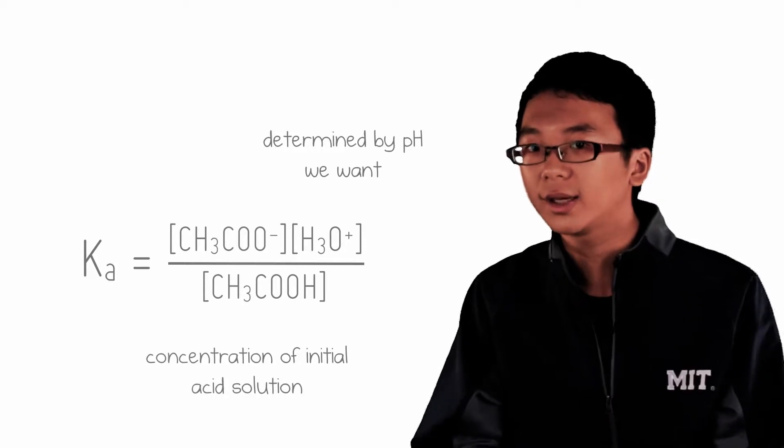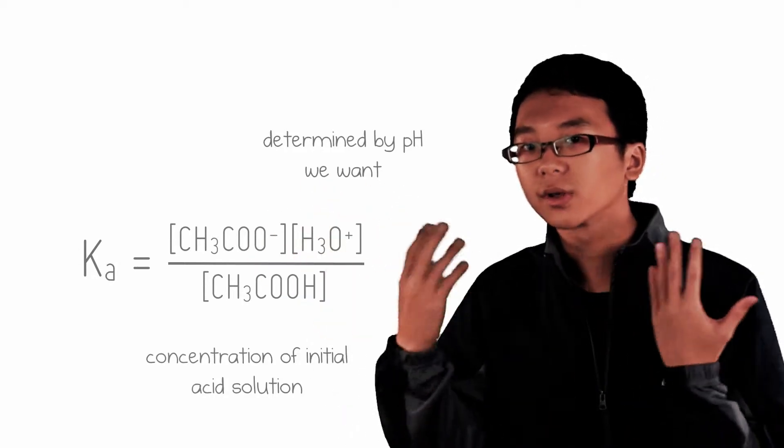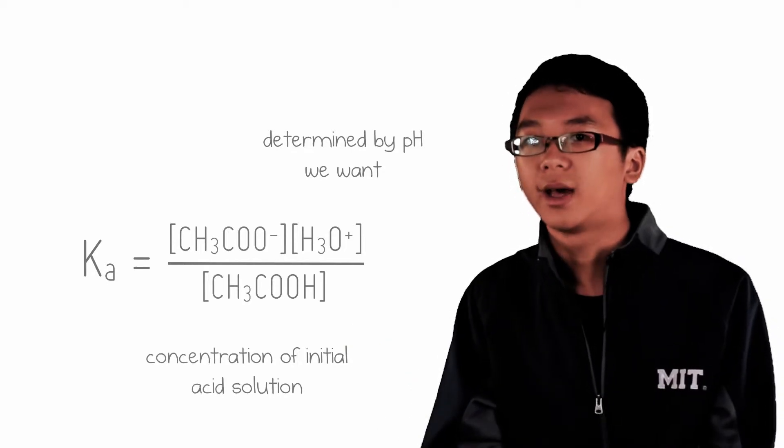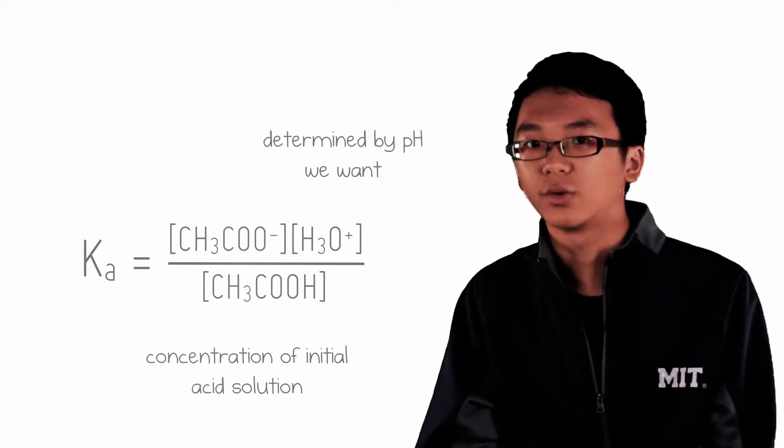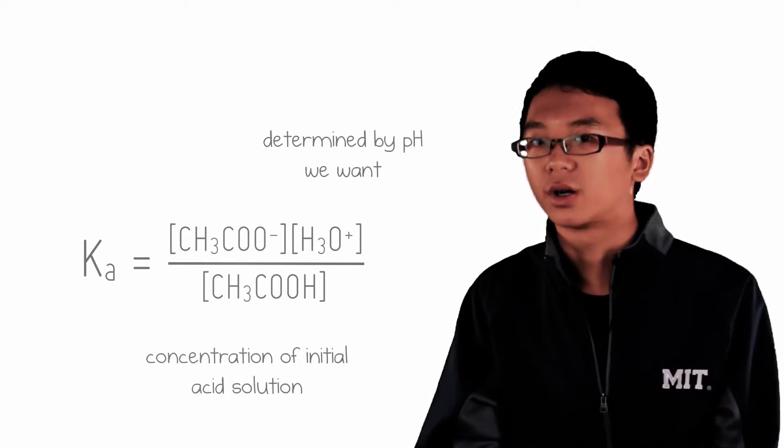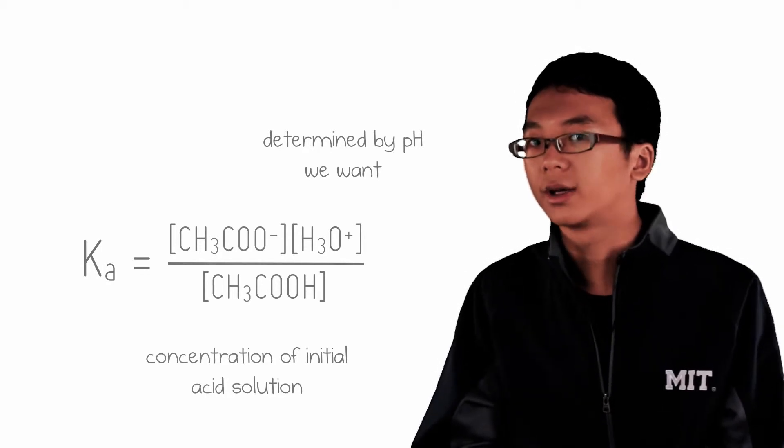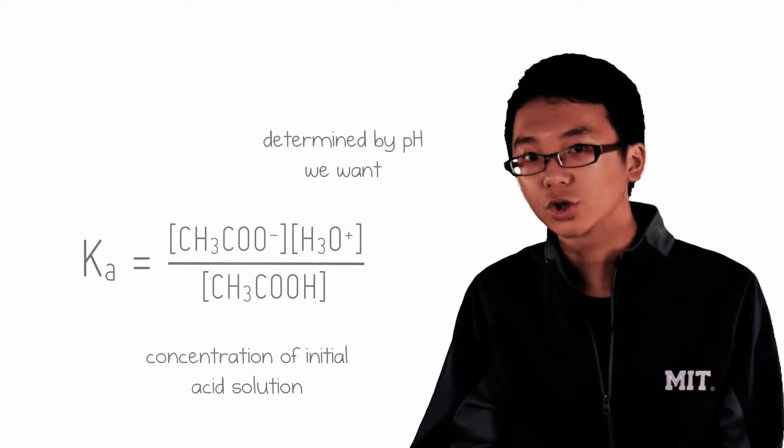which pushes the already weak dissociation of ethanoic acid backwards, preventing most of the acid from dissociating. As a result, the concentration of ethanoic acid at equilibrium would not be much different from its initial concentration. This is a valid assumption we often make when doing calculations related to buffer solutions.